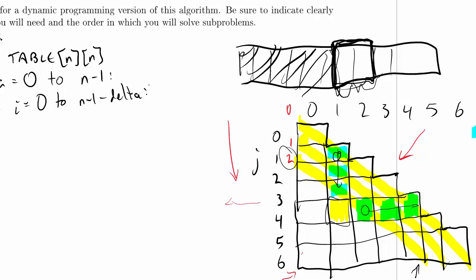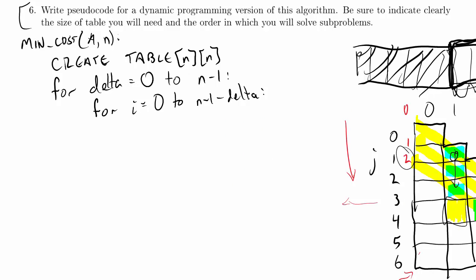You might be tempted at this point to add another loop for j — don't. This is only a doubly nested loop; we have a two-dimensional array and that's all we need. The value of j is fully defined by i and delta, so just set j = i + delta.